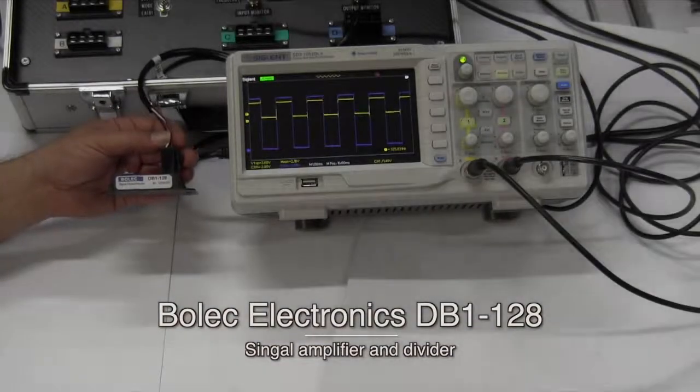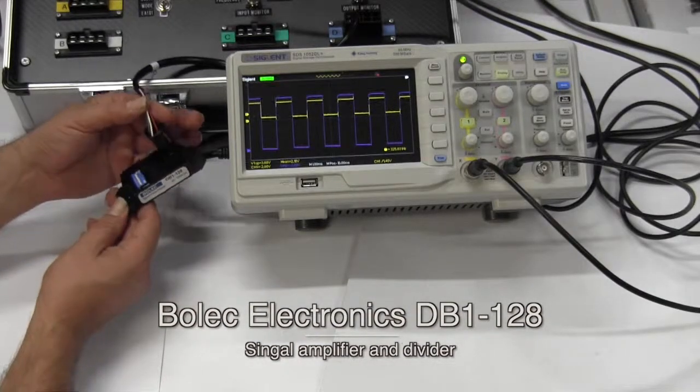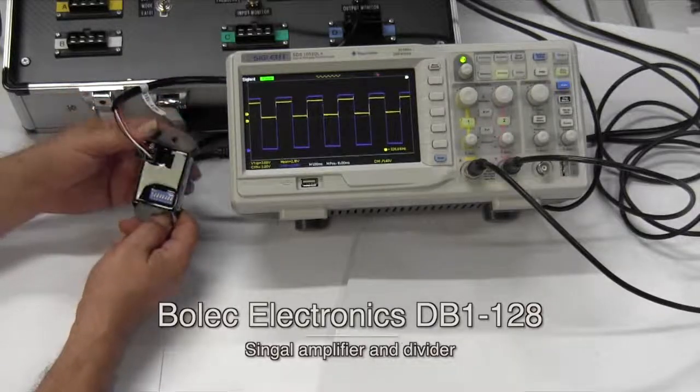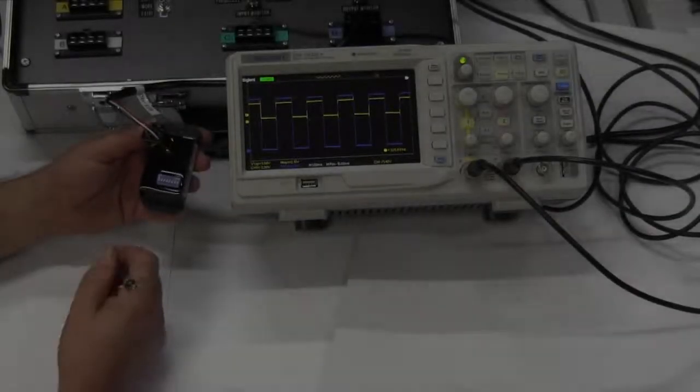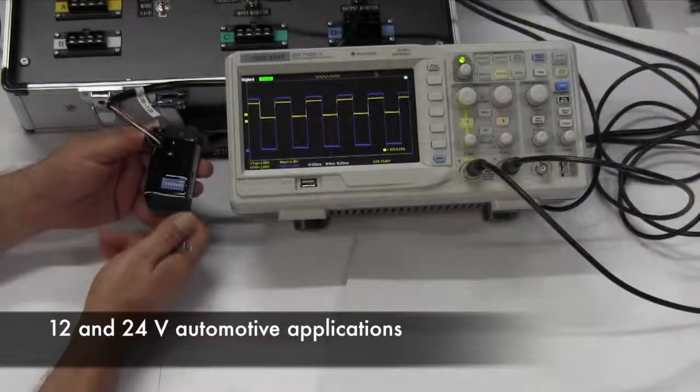The Bolec DB1-128 Signal Amplifier and Divider. The Bolec DB1-128 is the signal amplifier and divider for 12 and 24 volt automotive applications.